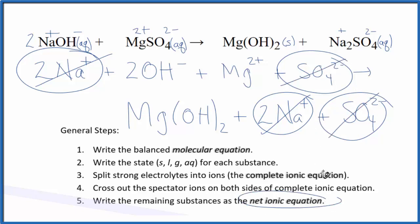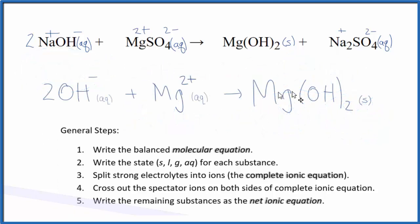And what's left is the net ionic equation for sodium hydroxide plus magnesium sulfate. I'll clean this up, write the states in. We'll have our net ionic equation. And this is the balanced net ionic equation for NaOH plus MgSO4.